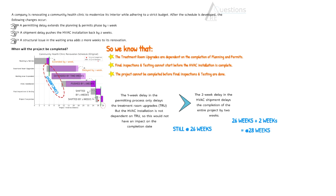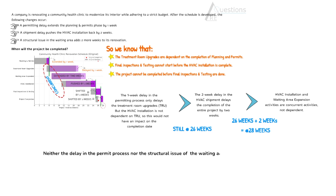The tricky part here is the delay in the waiting area expansion. The waiting area expansion is a concurrent activity with the HVAC installation, so it doesn't have an impact on the overall schedule. Another important point to remember is that even though the treatment room upgrade is pushed by one week because of the delay in the planning and permit process, that does not have an impact on the start of the HVAC installation — because HVAC installation is not dependent on the completion of treatment room upgrades. So neither the delay in the permit process nor the structural issue in the waiting area expansion would have an impact on the project completion date.